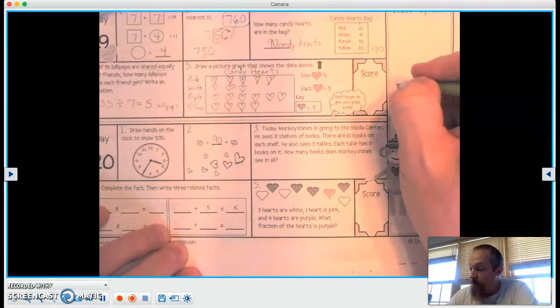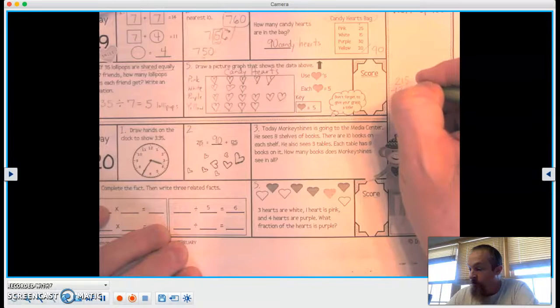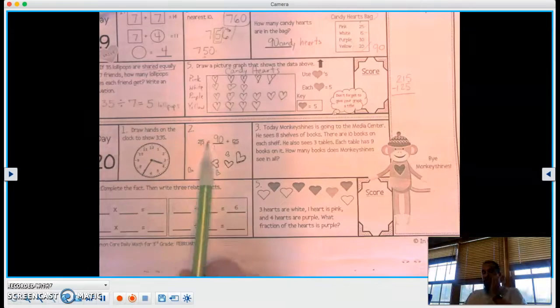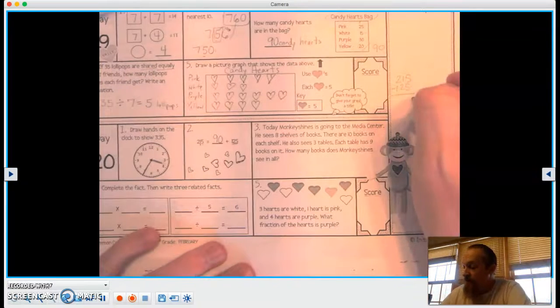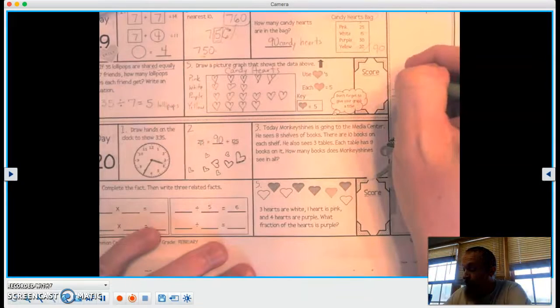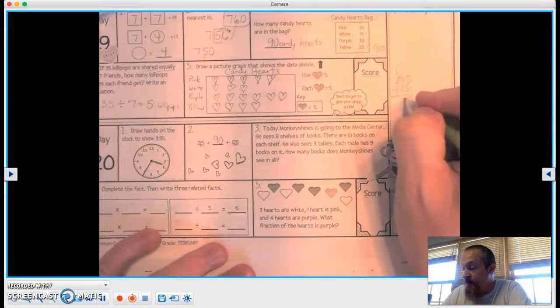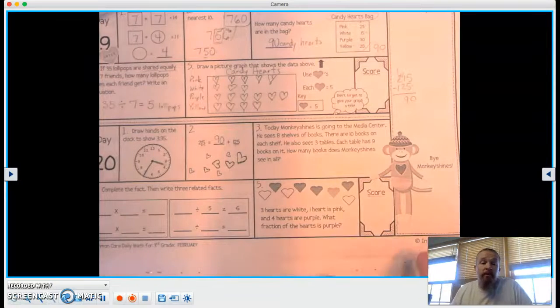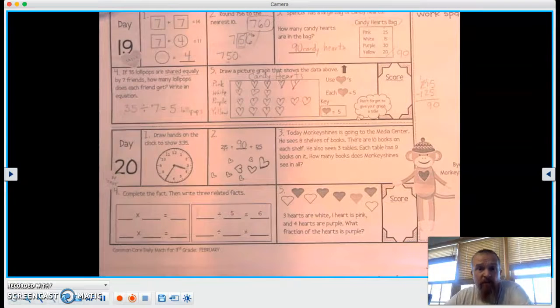So we can also go like this. Let's go ahead and do 215 minus 125. Even though it's a plus sign, right? That's our big number. That's the top of the triangle. So 5 minus 5 is 0. 1 minus 2, we just can't do. More on the floor, borrow from next door. 11 minus 2 is 9. 1 minus 1 is 0. It's also 90. Same one we already got. Just kind of a fun way to do it. Sometimes just easier in your head and faster.